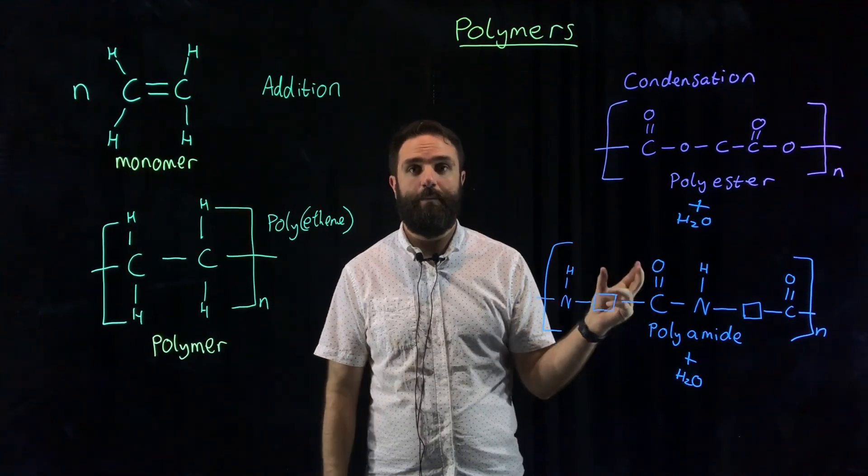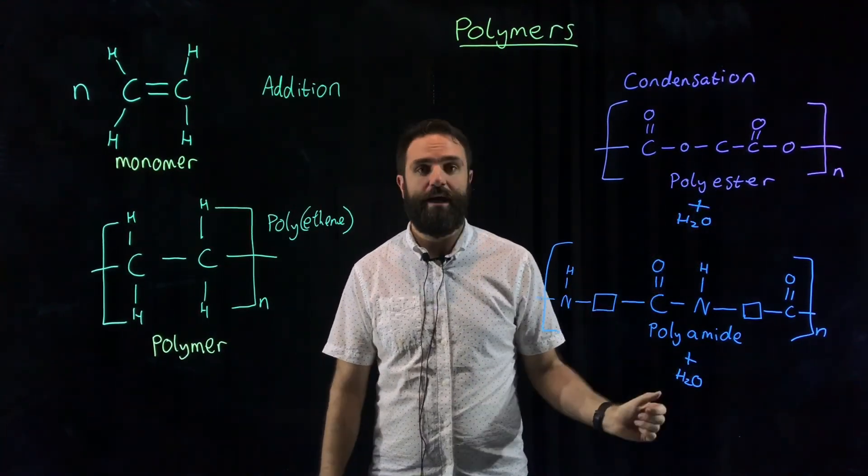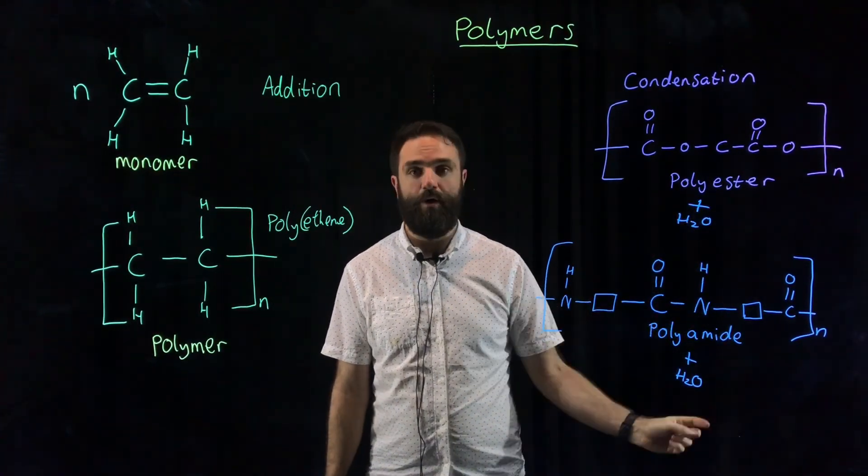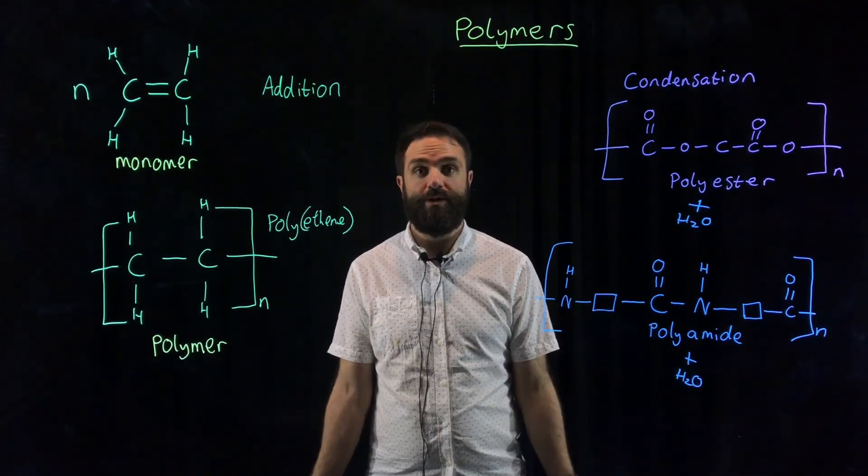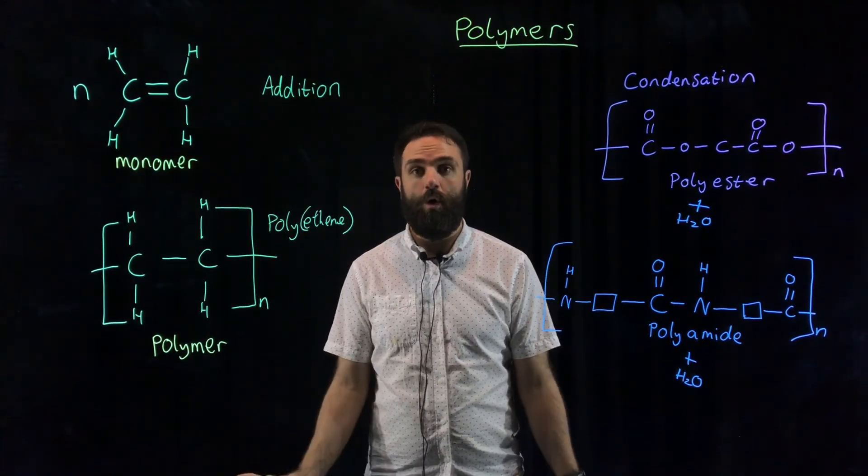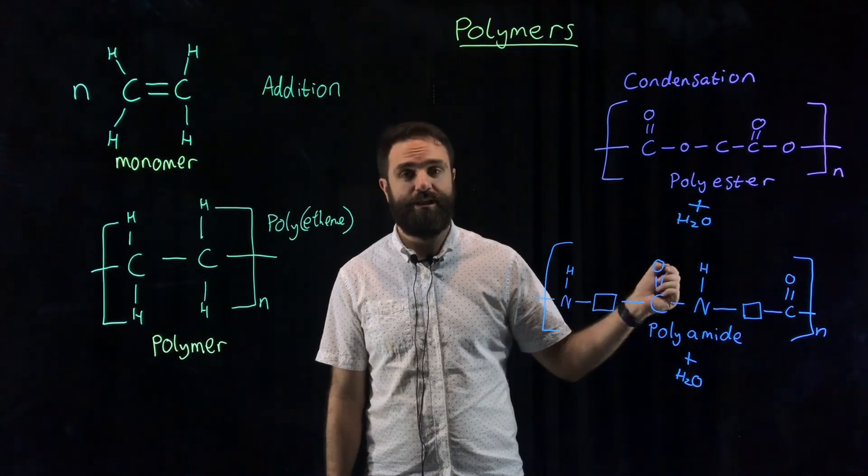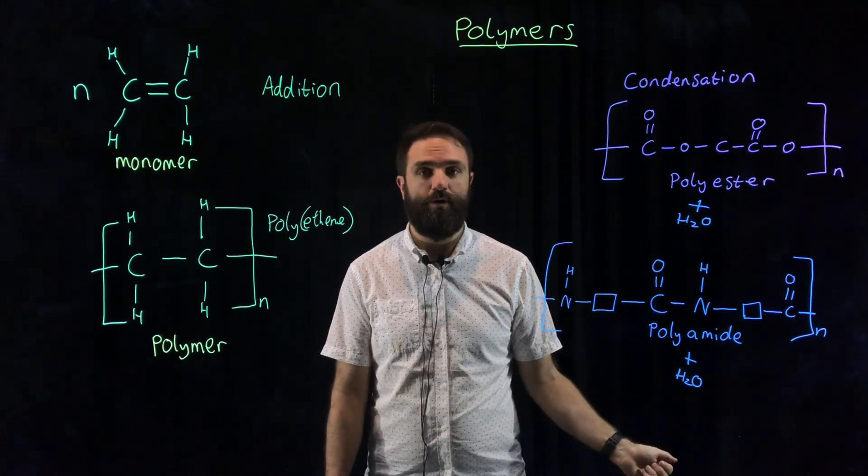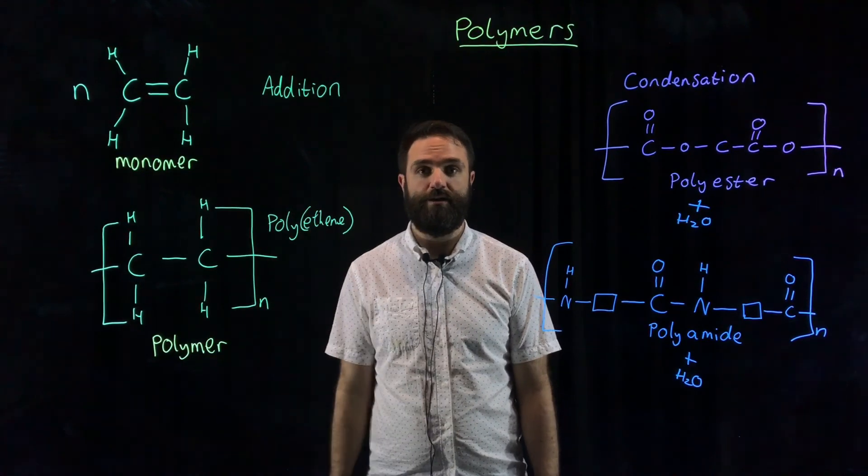So polyesters are made of many ester bonds. Polyamides are made of many amide bonds. Condensation polymers can have more than one type of monomer. Addition polymers all made of the same polymer. Condensation reactions lose a molecule of water each time. Addition do not. You just add more things on. So that is the two types of polymer.